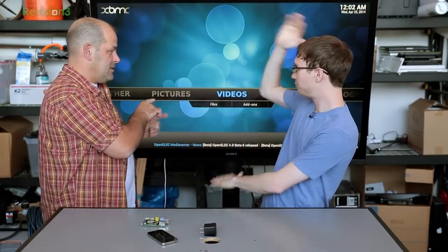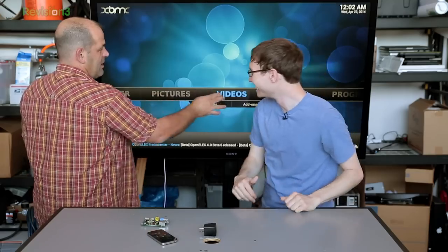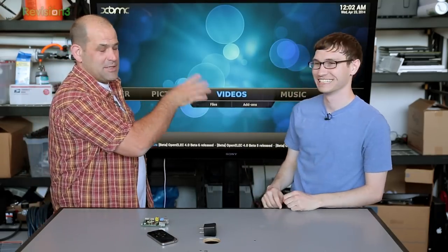So you select OpenELEC, you pull the power, plug the power back in, restart, and you get something that looks like this. After the bootloader, you'll get this. There's a couple minutes of black screens and letters and stuff.